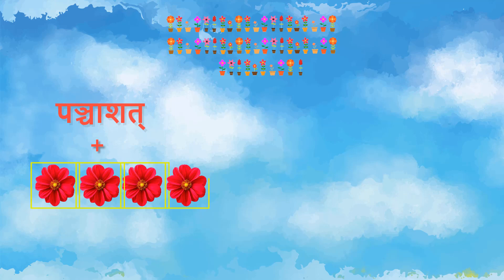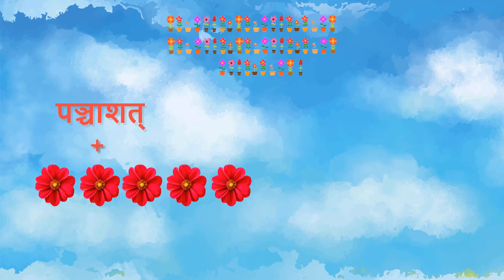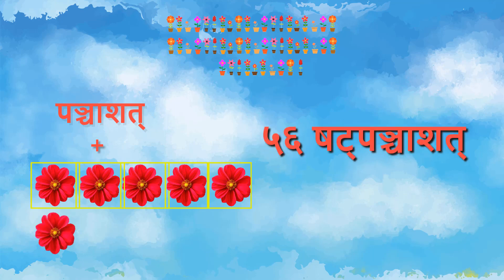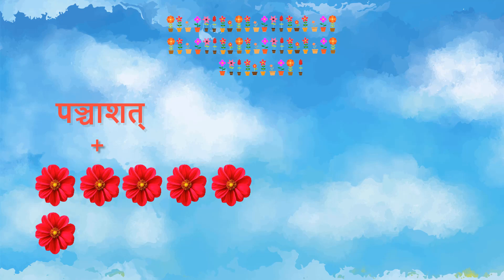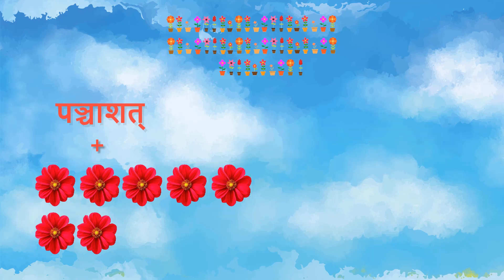त्रीनी, चत्वारी, पंच — पंच पंचाशत 55, Fifty plus five. अब आगे जोड़ेंगे एकम, द्वे, त्रीनी, चत्वारी, पंच, षड् — षड् पंचाशत Fifty-six. अब पंचाशत पुष्प में जोड़ेंगे एकम, द्वे, त्रीनी, चत्वारी, पंच, षड्, सप्त — सप्त पंचाशत Fifty-seven. सप्त means seven.